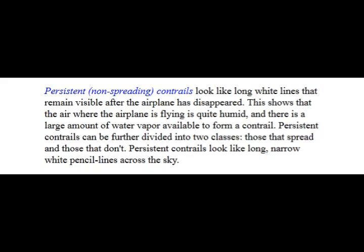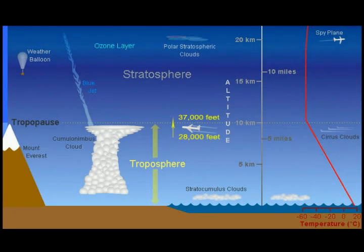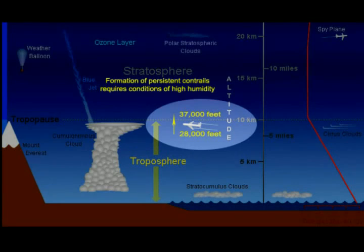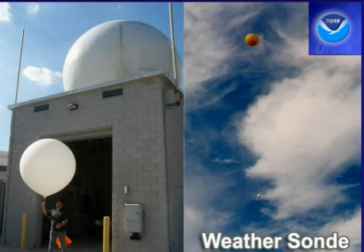The most important thing to consider is that persistent contrails require conditions of high humidity at the altitude where the jet is flying, above 26,000 feet. Commercial aircraft are cleared to fly at 37,000 feet down to about 32,000 feet to maximize fuel efficiency. If we use available weather data to determine the relative humidity between 28,000 and 37,000 feet, we can predict the likelihood of formation of persistent contrails between those altitudes.